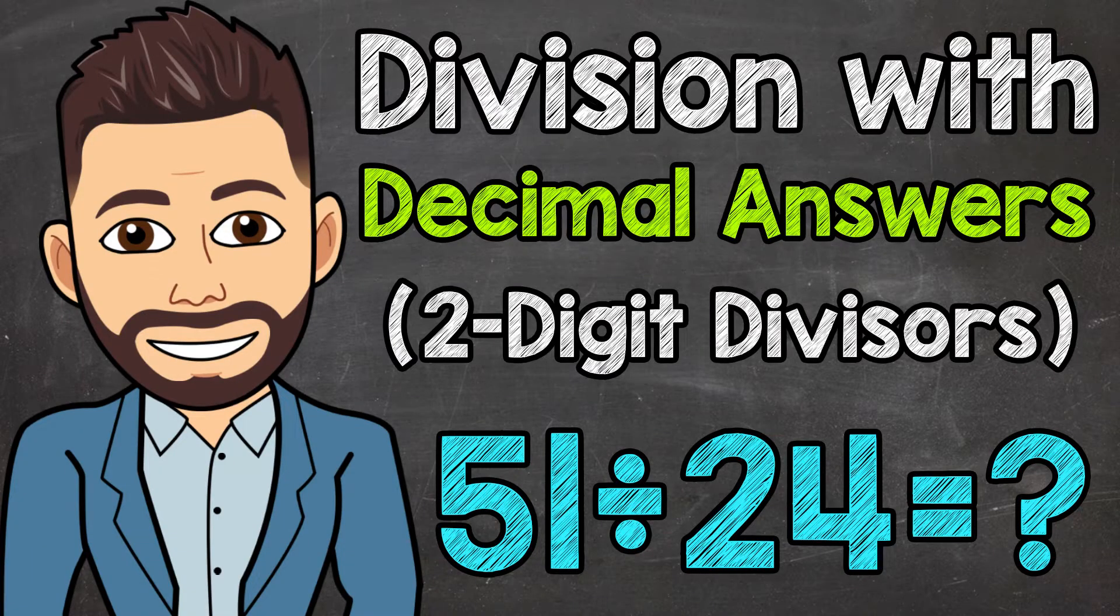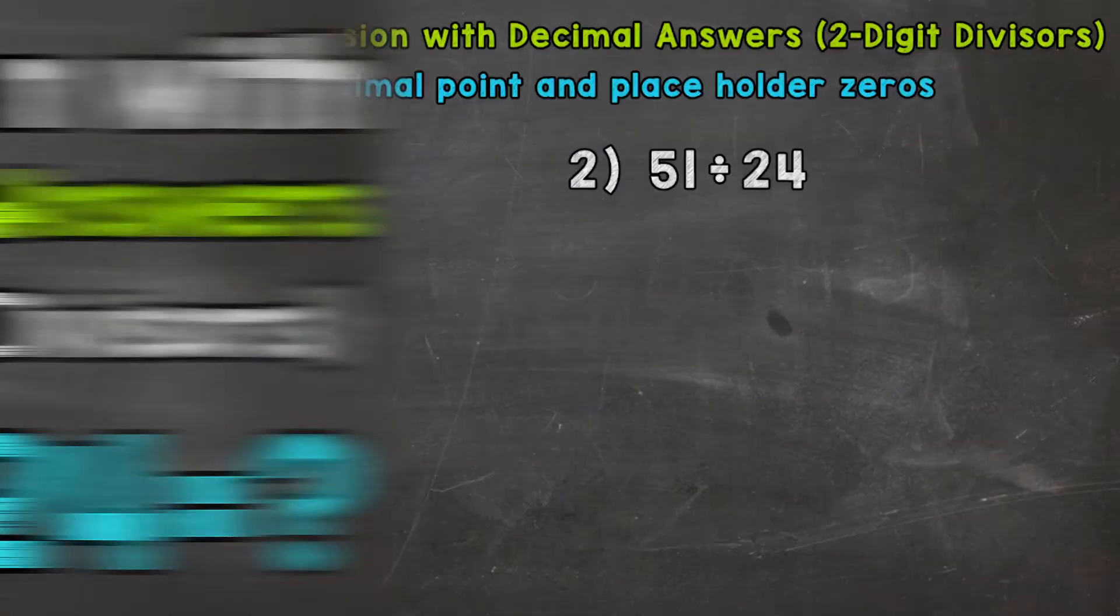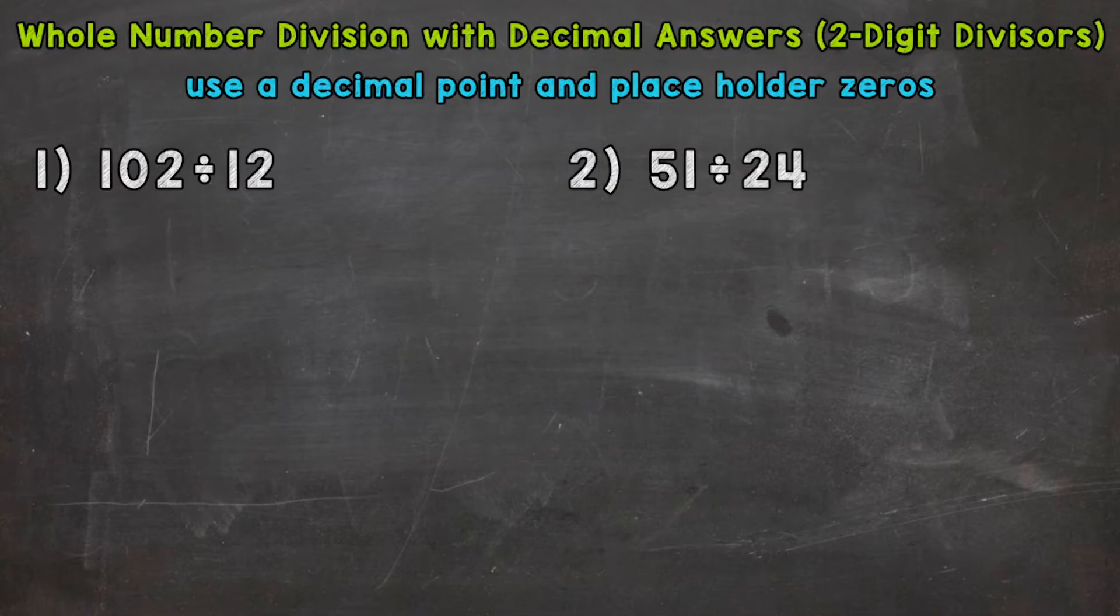Welcome to Math with Mr. J. In this video I'm going to be covering whole number division with decimal answers or decimal remainders, and we're going to be working with two-digit divisors. So when we're looking for decimal answers or decimal remainders, we need to use a decimal point and placeholder zeros.